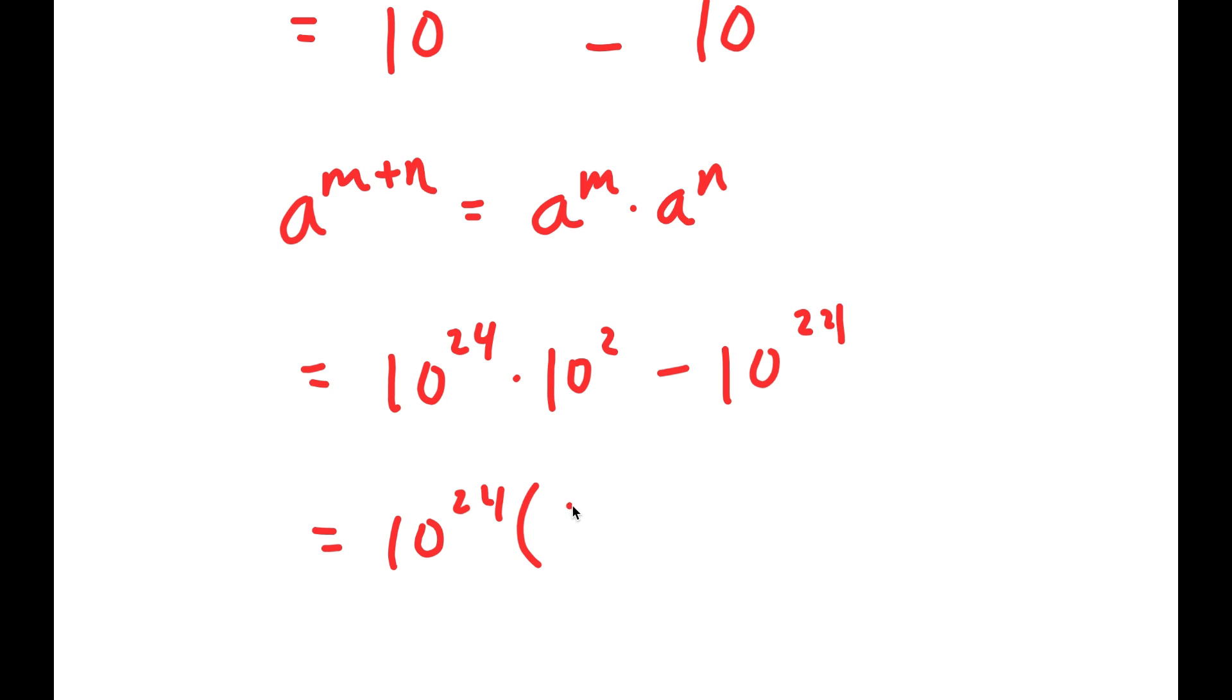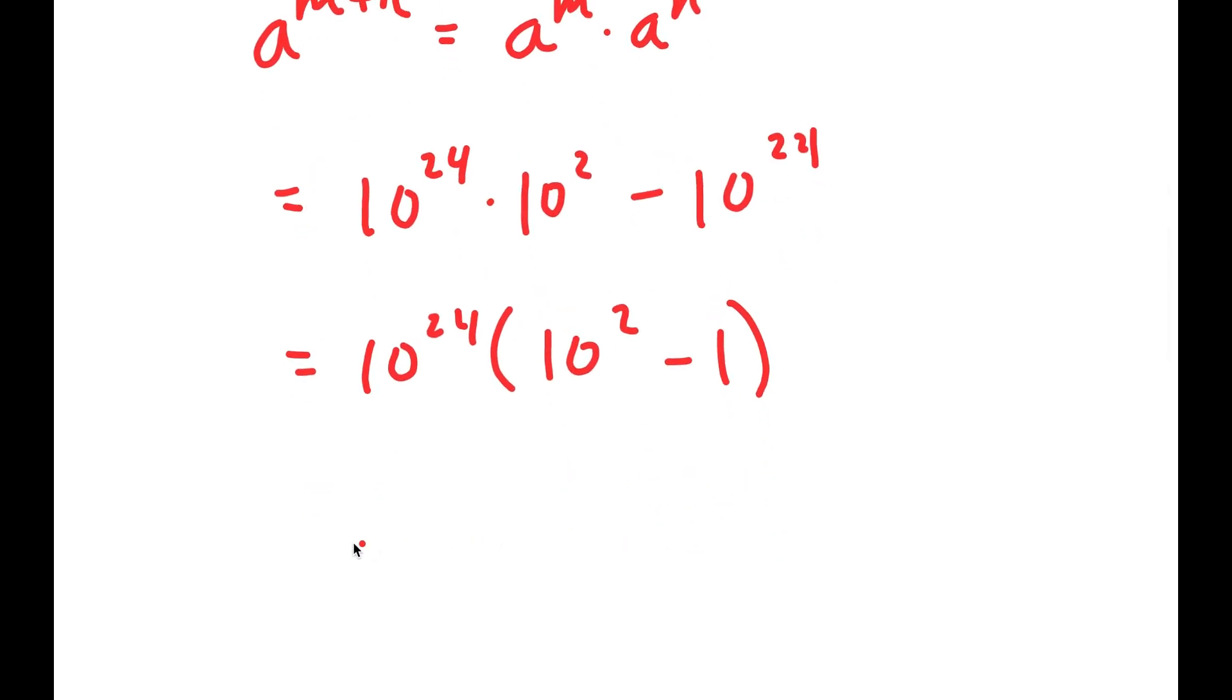So I get 10 to the power of 24 times 10 squared minus 1, which is equal to 10 to the power of 24 times 99.